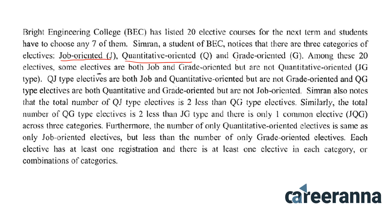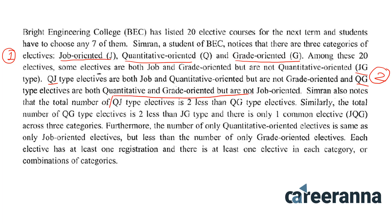Set A is job oriented (J), set B is quantitative oriented (Q), and set C is grade oriented (G). The intersections are JG, QG, and QJ. The third piece of information tells us QJ is two less than QG, and the fourth states QG is two less than JG.